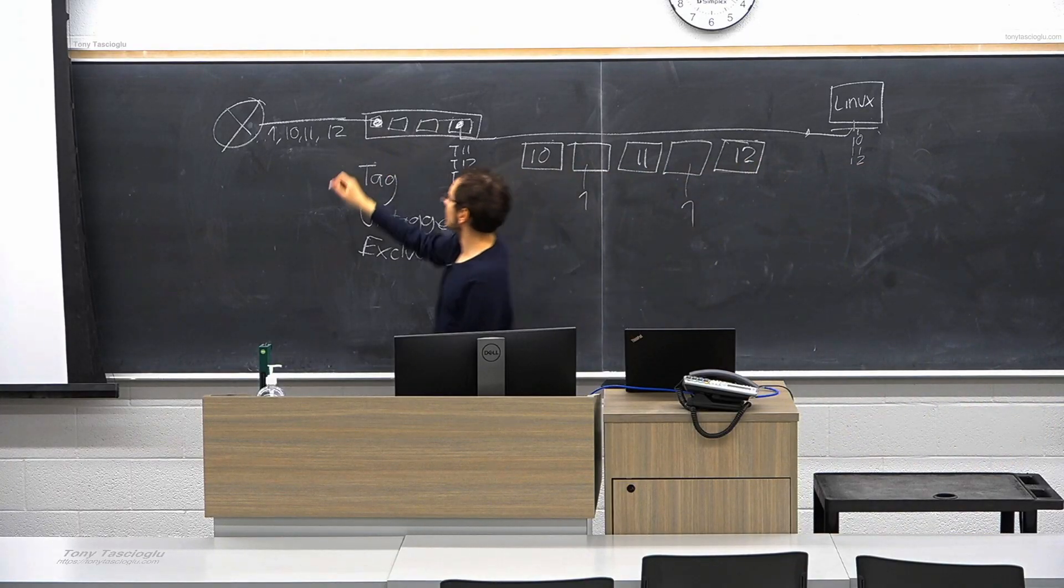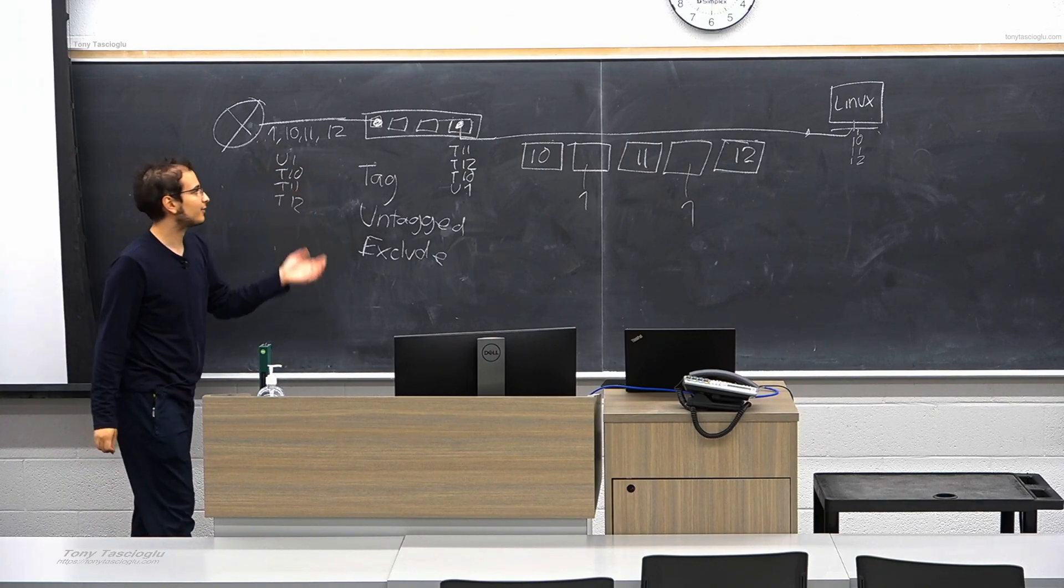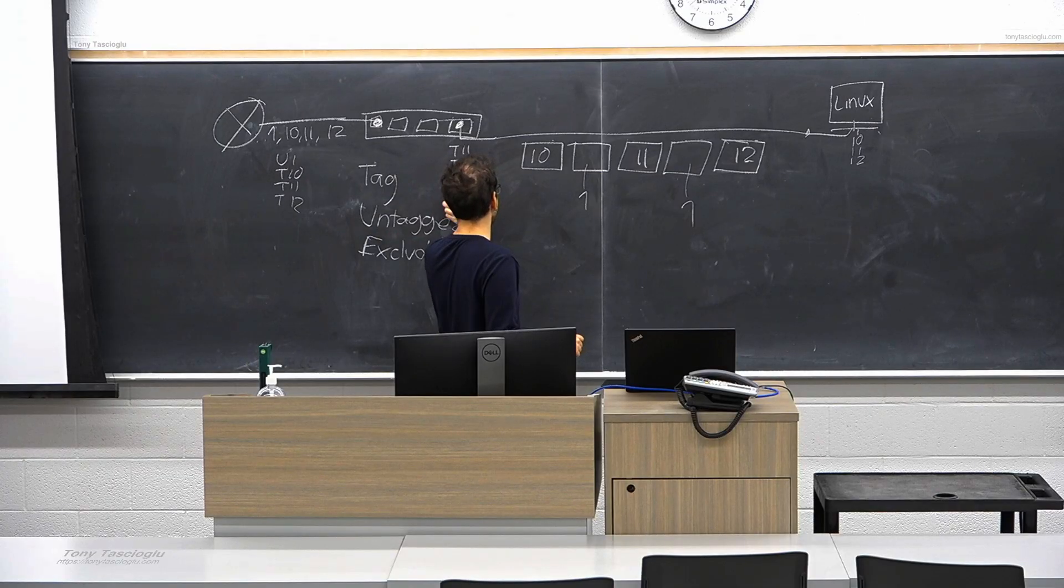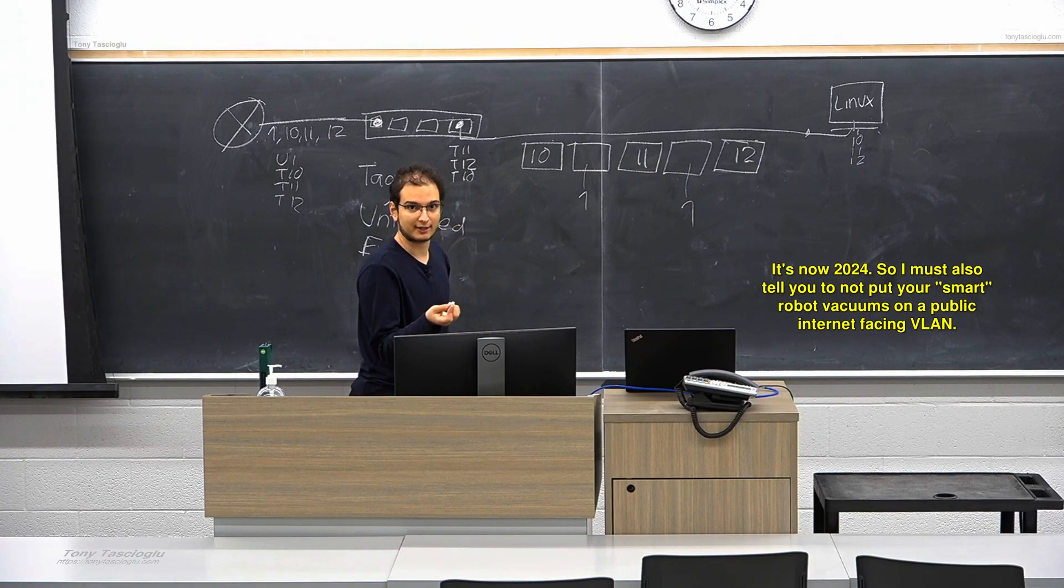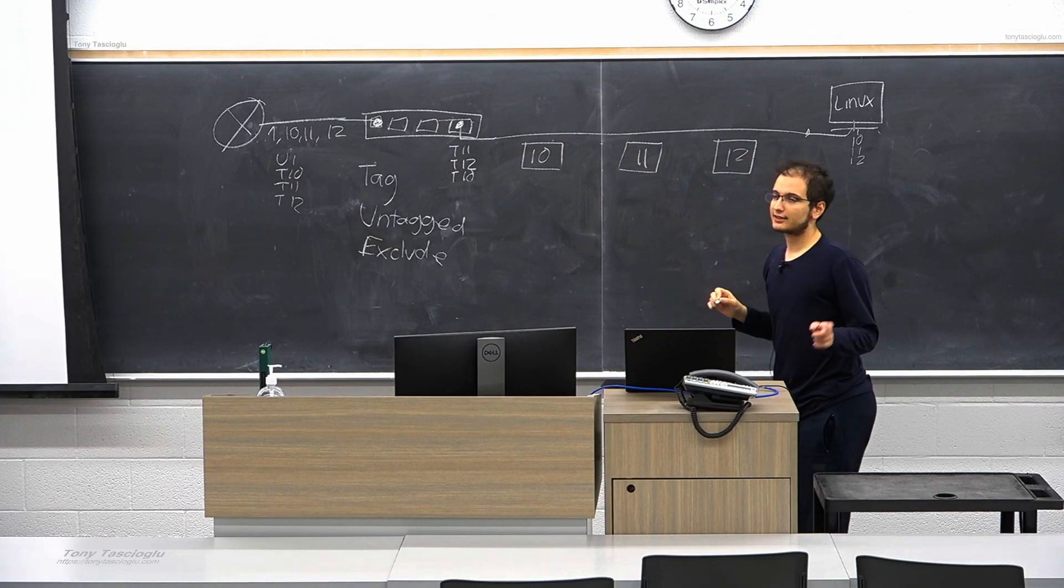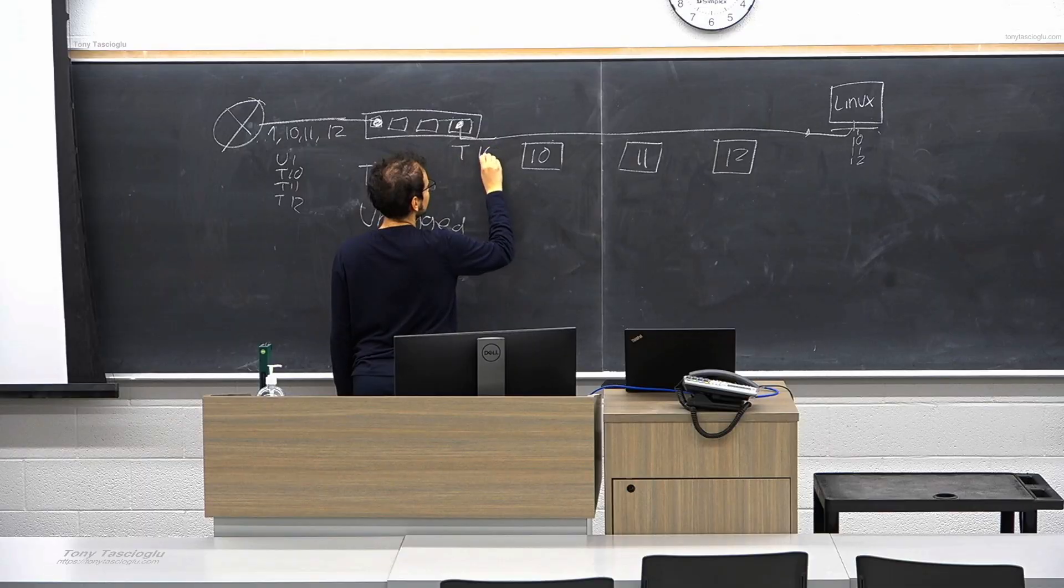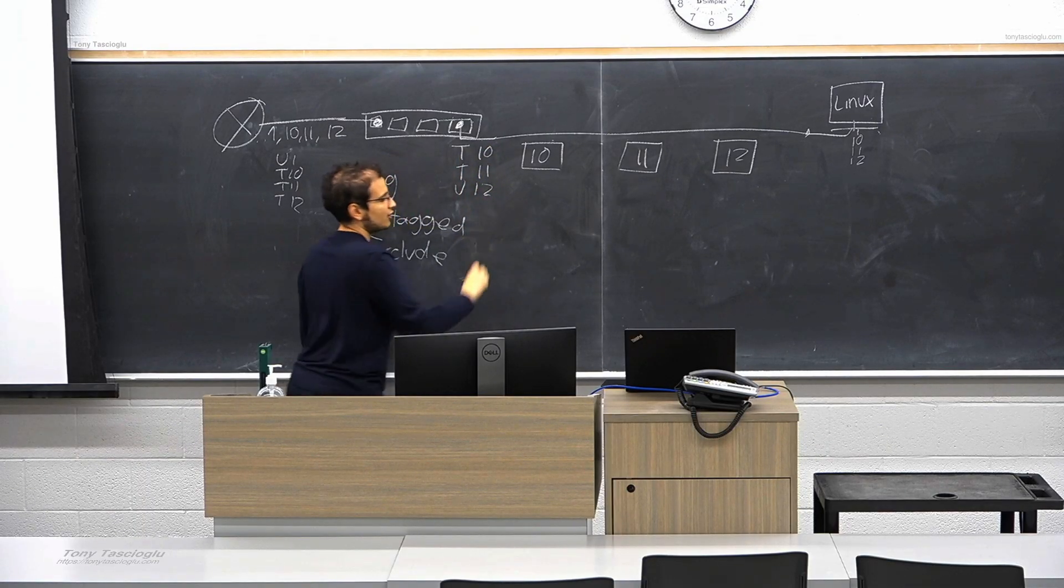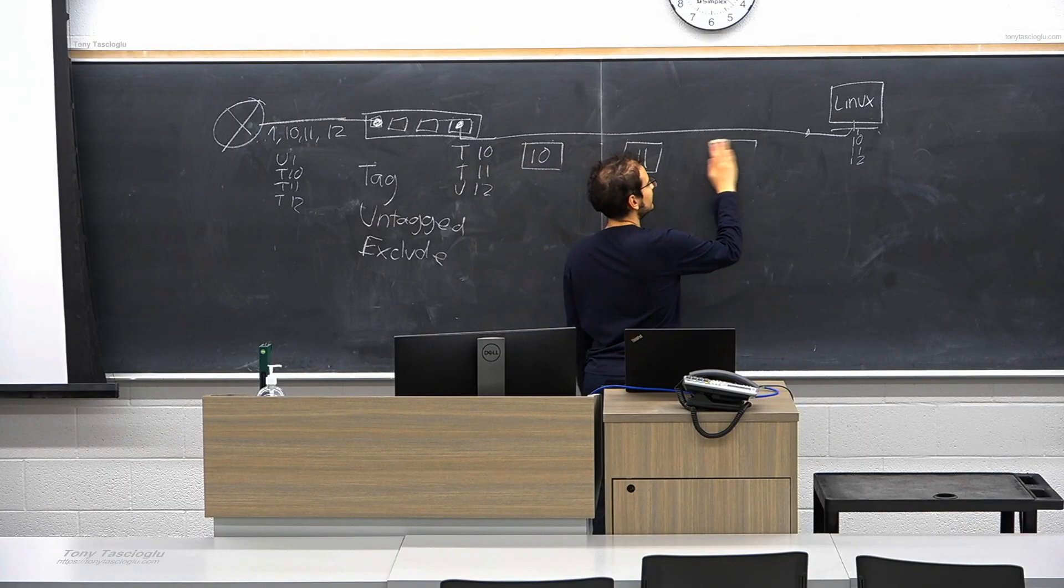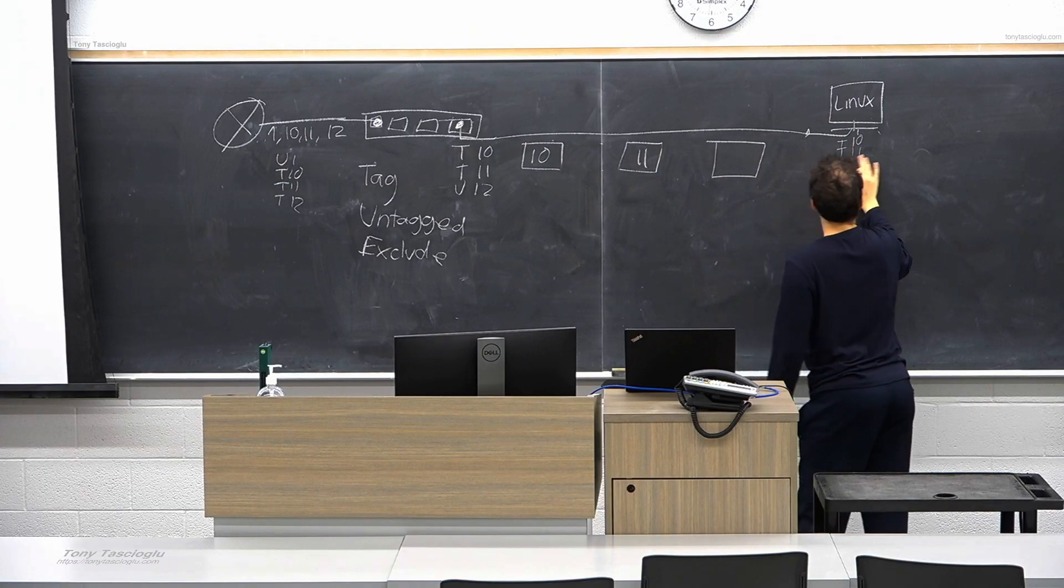What does this mean? This means that 10, 11, and 12 are allowed to flow on this wire and they will remain tagged. But I can also have packets from VLAN 1. Untagged means that these ones will be sent with no header. So this computer, the minute you plug it in, it's automatically going to connect to the untagged one. It's going to receive untagged packets, and when it sends stuff, it's going to send them without tagging them. So they're going to go as part of this untagged VLAN.